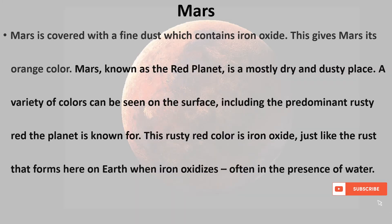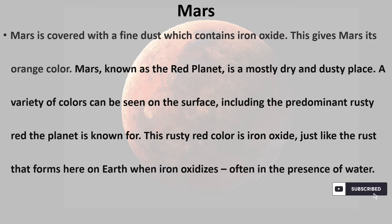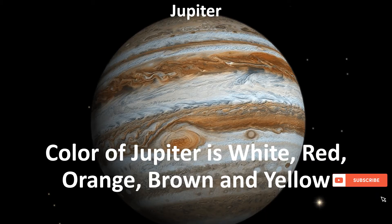The color of Mars is orange. Mars is covered with a fine dust which contains iron oxide, giving Mars its orange color. Mars, known as the red planet, is a mostly dry and dusty place. A variety of colors can be seen on the surface, but the predominant rusty red color comes from iron oxide — just like the rust that forms on Earth when iron oxidizes, often in the presence of water.